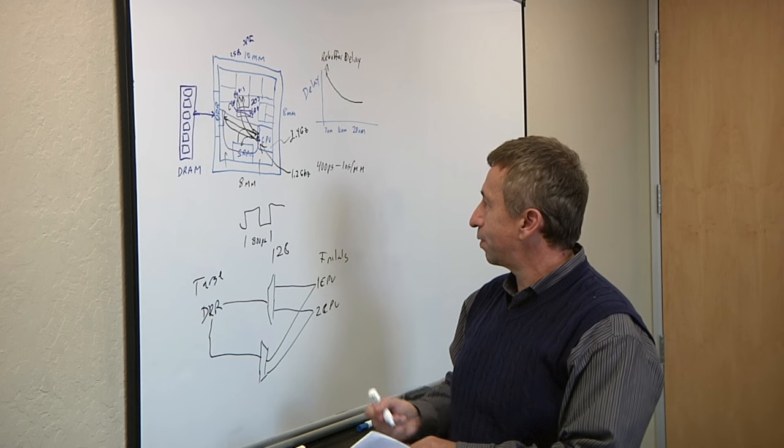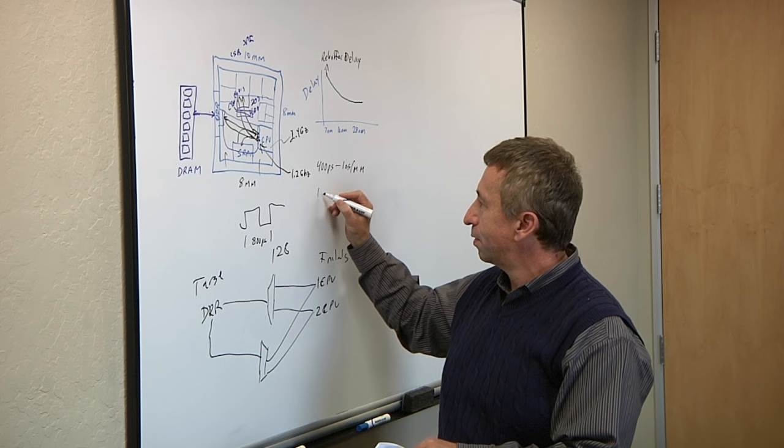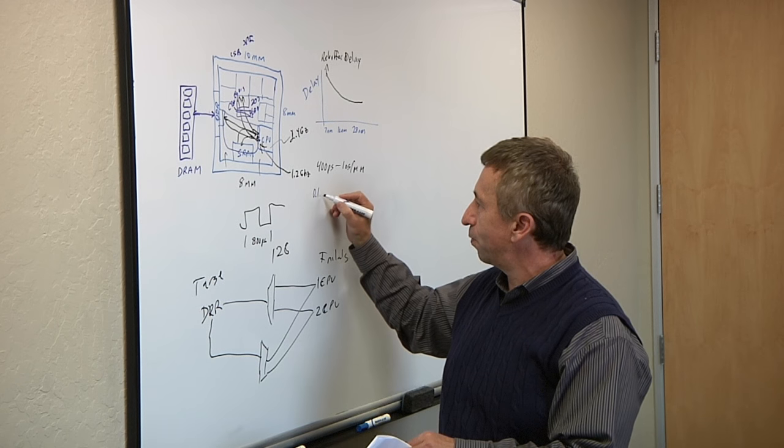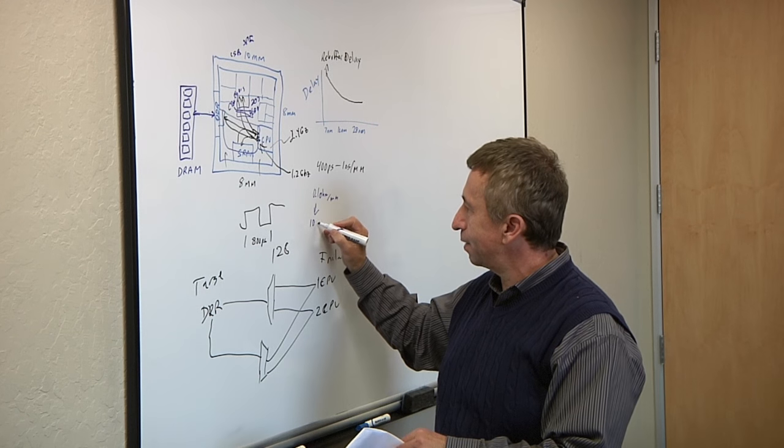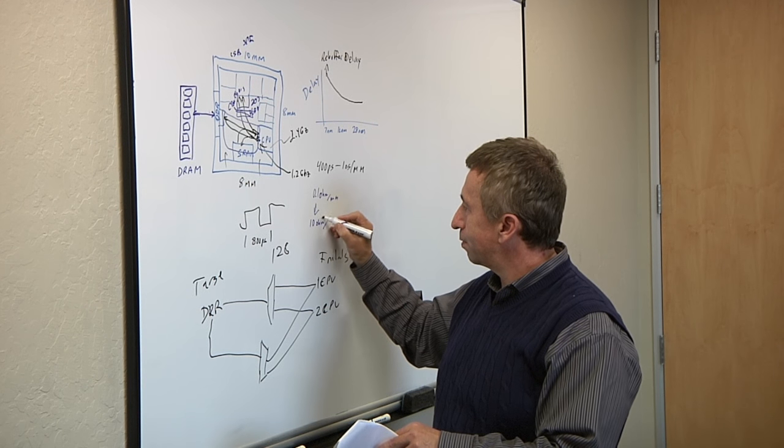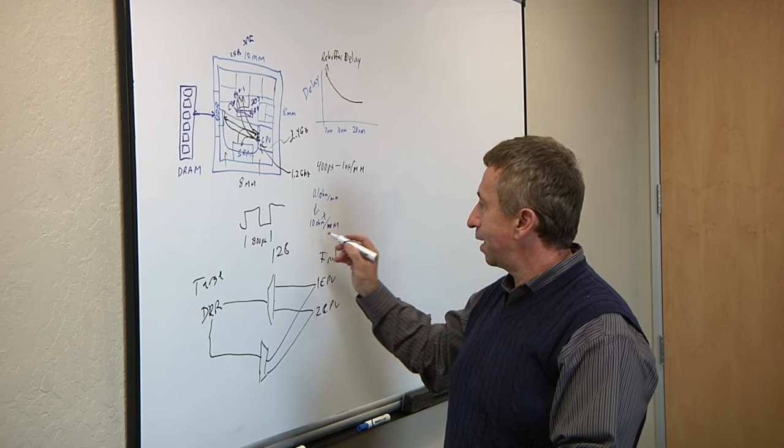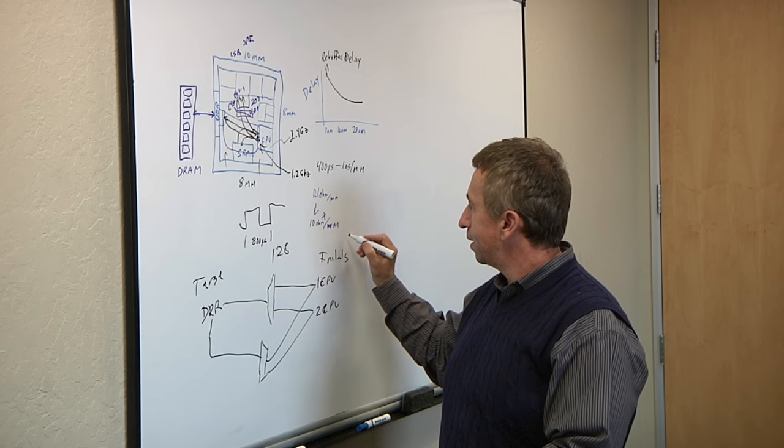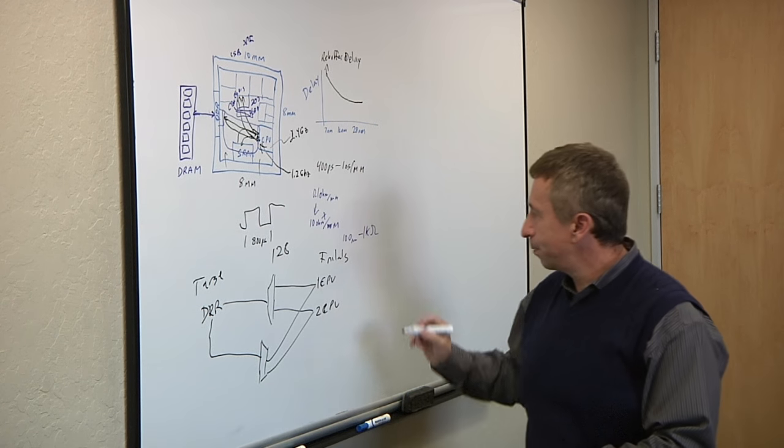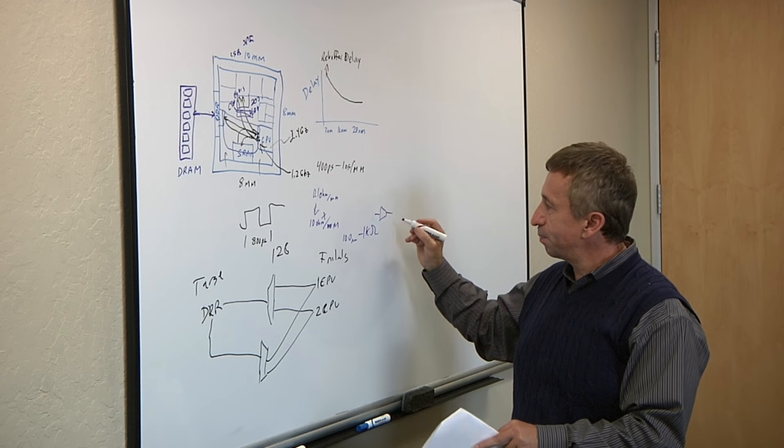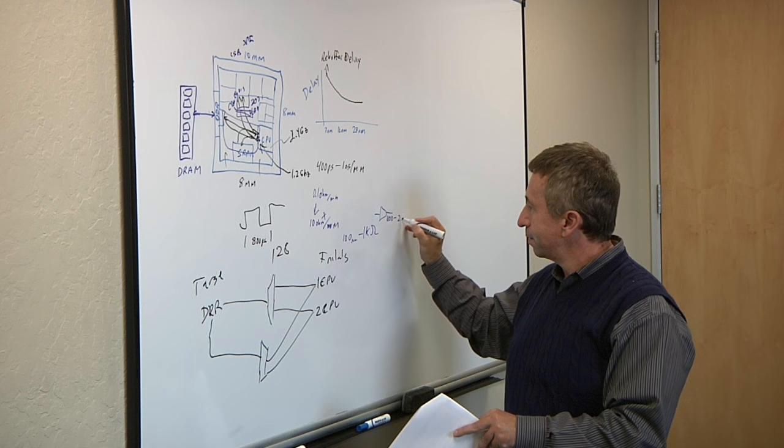We're starting to go from what used to be negligible, let's say 0.1 ohms per micron, now we're getting into 10 ohms or more per micrometer. If you think about this, 100 microns is going to give you 1 kilo ohm. If you look at the output impedance of a good driver, it's probably somewhere around 800 to 2 kilo ohms.